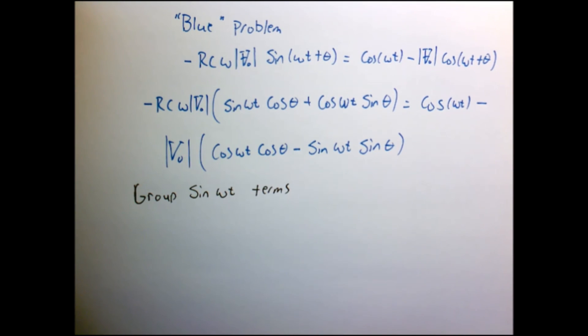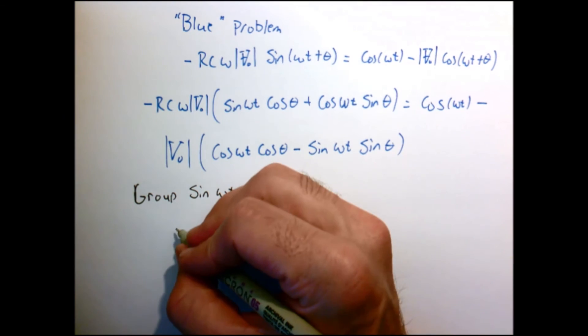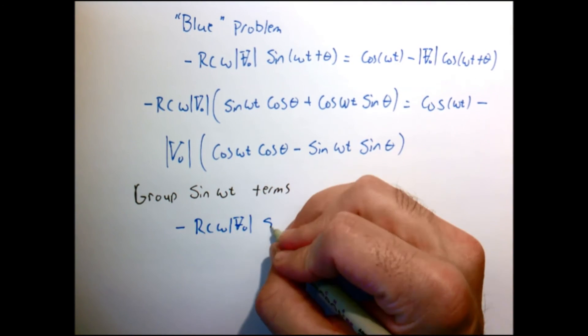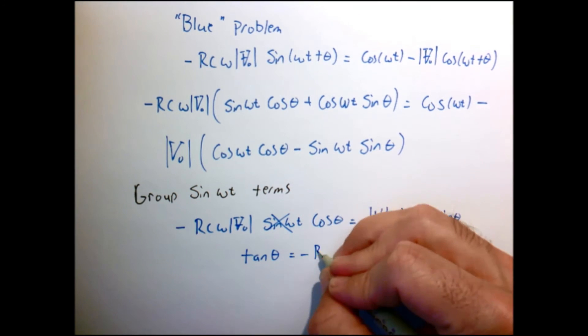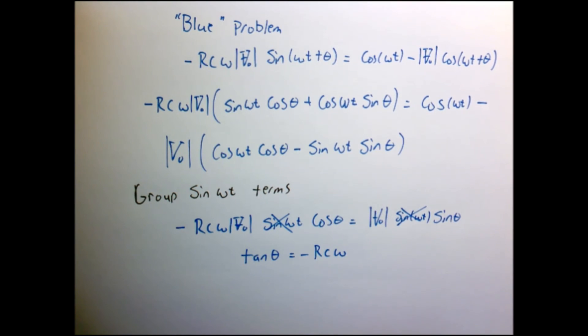And all the terms that multiply cosine omega t must also separately be zero, because we want this equation to be true at every instance in time. So if I group the sine of omega t terms, I get the same answer that I got before. The tangent of theta is equal to minus rc omega.